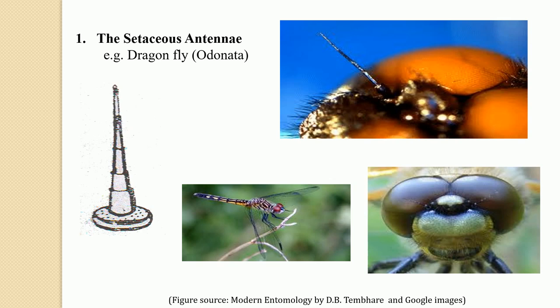The sexual dimorphic significance means that in different sexes — for example, the male mosquito contains a different type of antennae and the female contains a different type. Whenever variation among the segments of antennae is found sex-wise, it is referred to as sexual dimorphic significance. The antennae is a crucial part of the head of an insect; it is a well-known sensory organ and has different kinds of forms. There are about 13 different types of antennae that can be recognized.